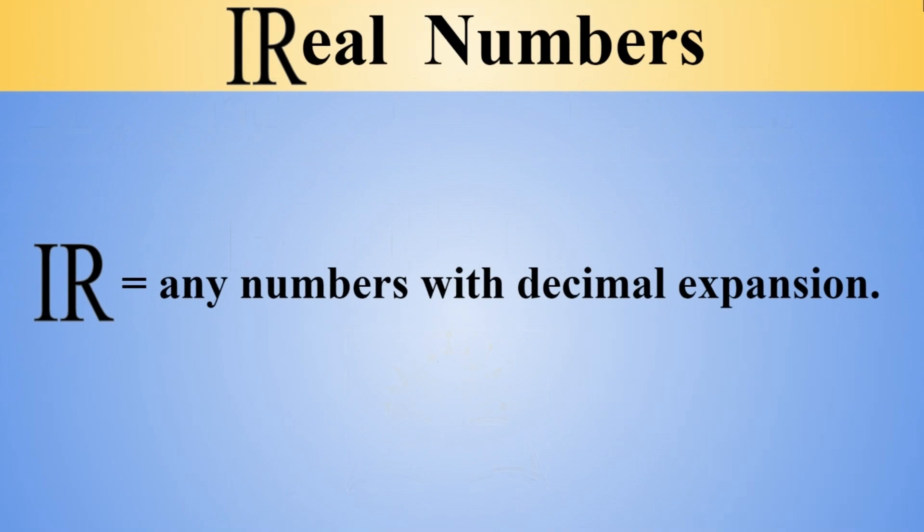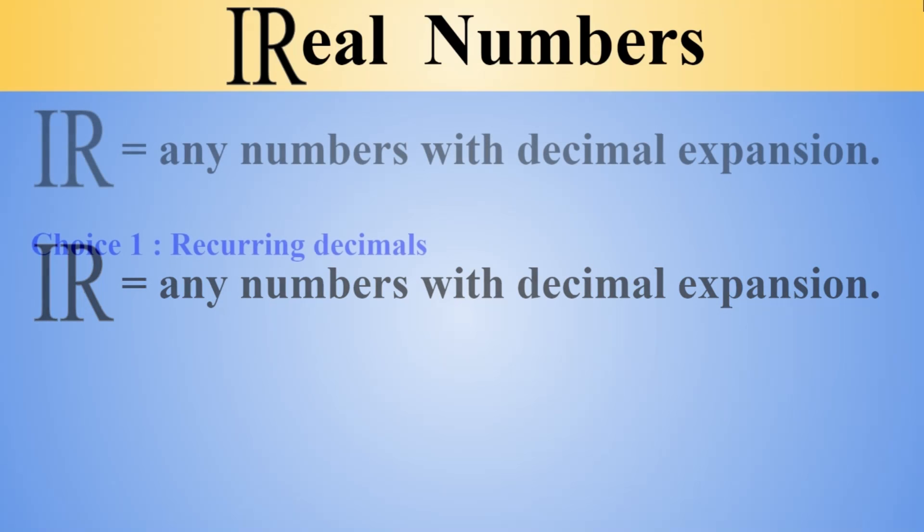Recall that in our last session, we have seen that the set of real numbers, R with a slash on the left, can be expressed as a decimal expansion. Now, if you think about what that means, there are really two options.